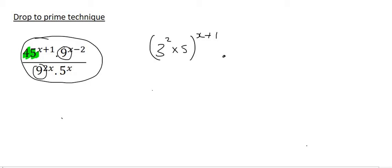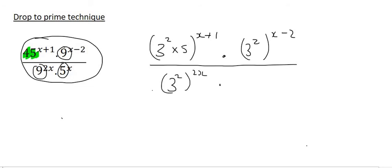We're then going to do the 9, which is going to be 3 squared in a bracket. And then we say x minus 2. Then at the bottom, we're going to break that 9 up into 3 squared in a bracket. And then you have 2x. And then this 5 is already broken down. You can't break 5 down anymore. And so that will stay like that.